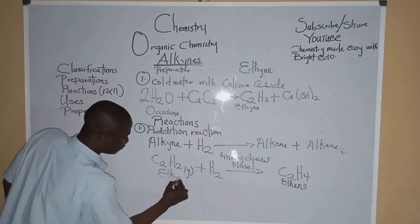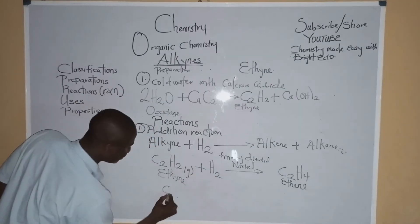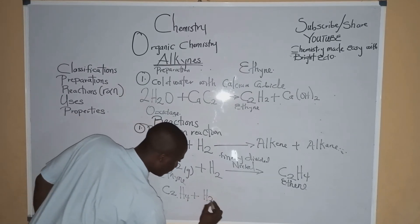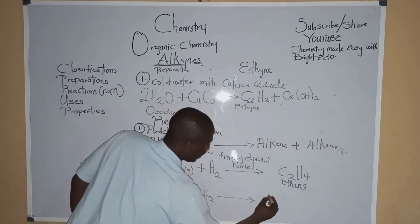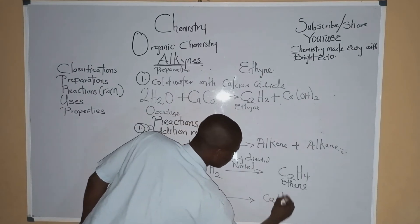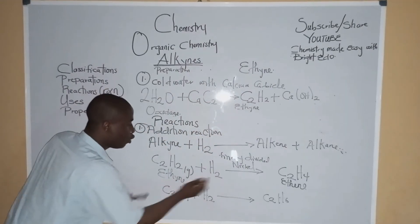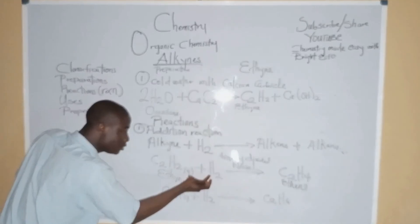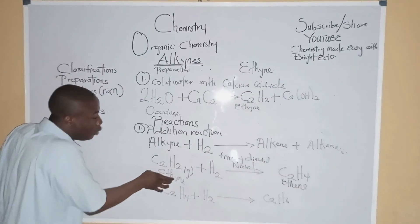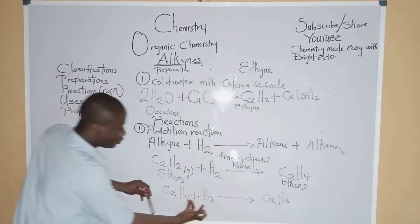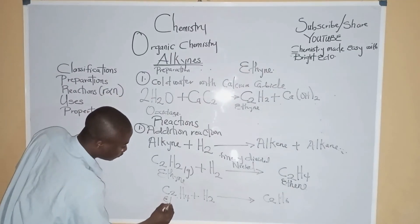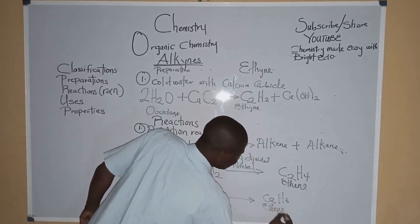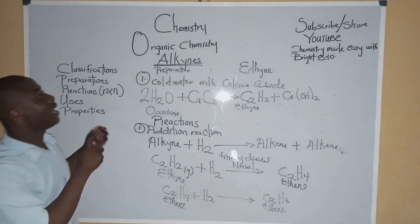For the reaction of ethene, C2H4 reacting with hydrogen, we get ethane which is C2H6. It is simply the addition of hydrogen to the molecule — that's why the reaction is called addition reaction. This is one of the major reactions of alkynes.